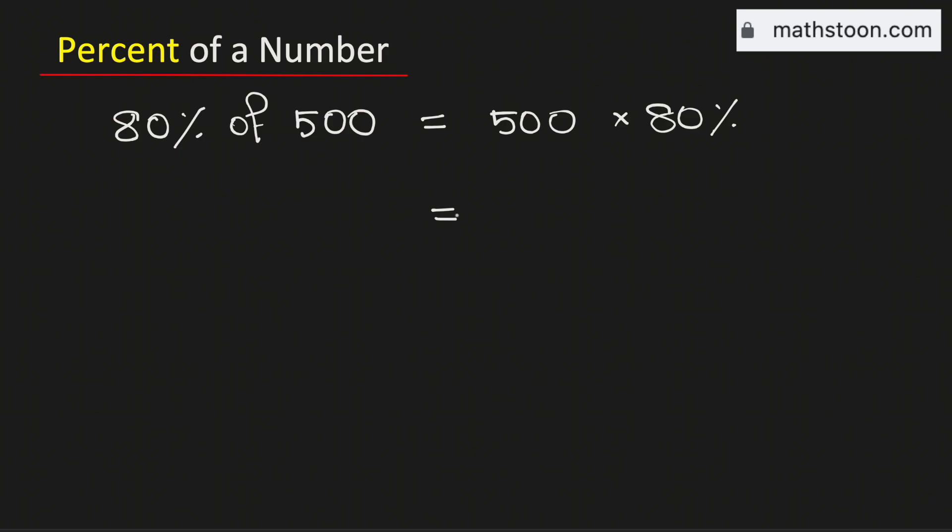In the next step, we will write 500 as 500 over 1. And we know that 80% is same as 80 over 100.